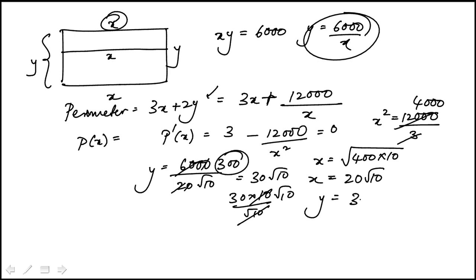So the dimensions are 20 root 10 by 30 root 10, and I have to make sure that it is a minimum. The second derivative is plus 24,000 over x cubed, which is positive, so it is a minimum. The dimensions are 20 root 10 by 30 root 10, which is choice C.